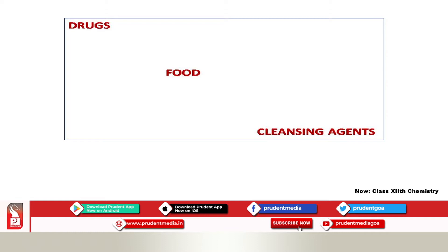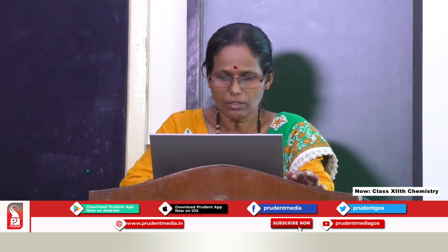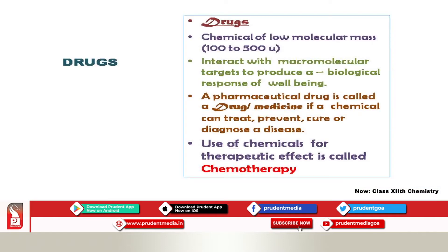All activities are controlled by chemistry and its principles. We are going to focus on only three items: drugs, food, and cleansing agents. Drugs are chemicals of very low molecular mass ranging from 100 to 500 unified mass units, or 100 to 500 grams per mole. These drugs interact with macromolecular targets such as enzymes, carbohydrates, and fats, producing a biological response of well-being. A pharmaceutical drug is called a medicine if that chemical can treat, prevent, cure, or diagnose a disease. The use of chemicals for therapeutic effect — inducing a sense of well-being and curing body and mind — is called chemotherapy.